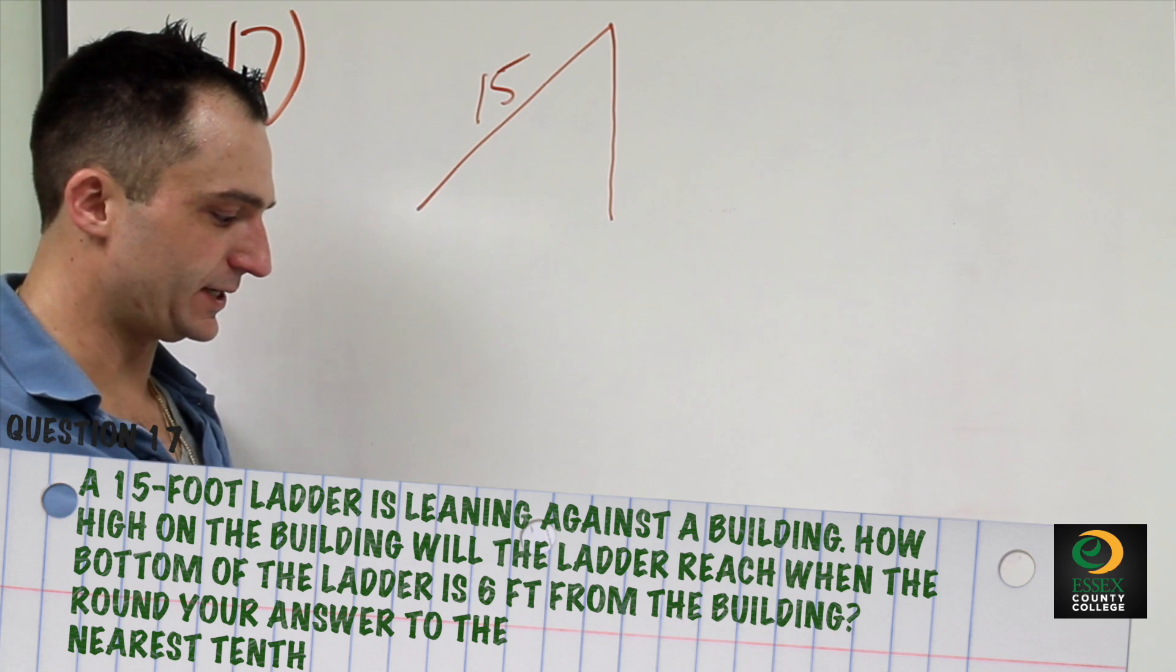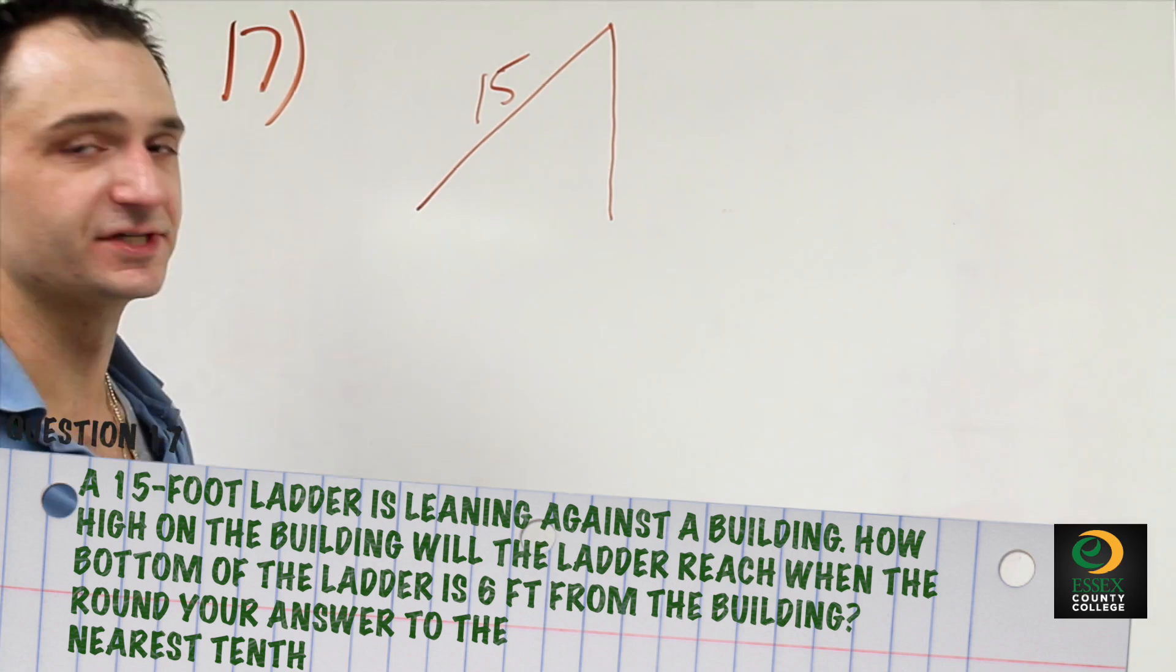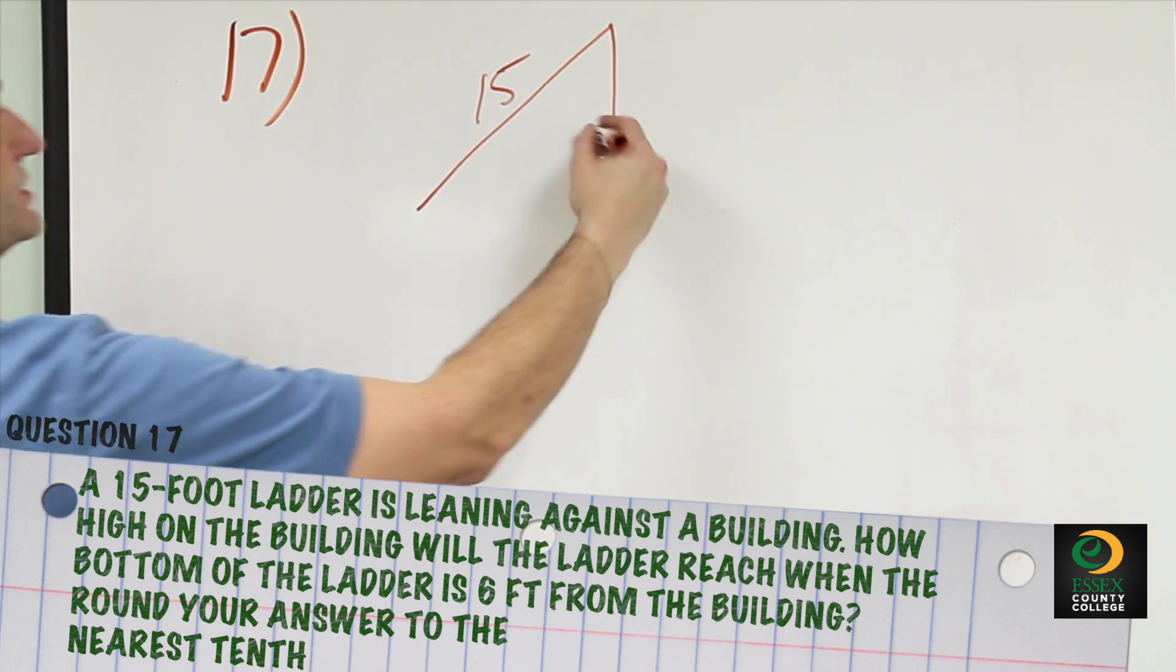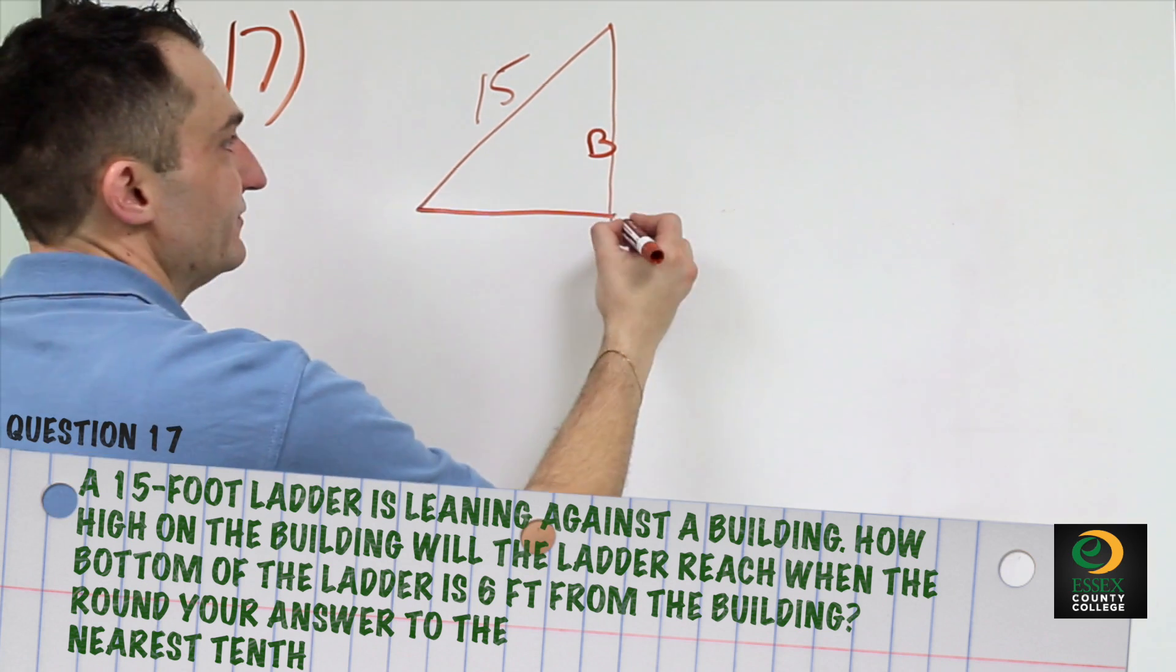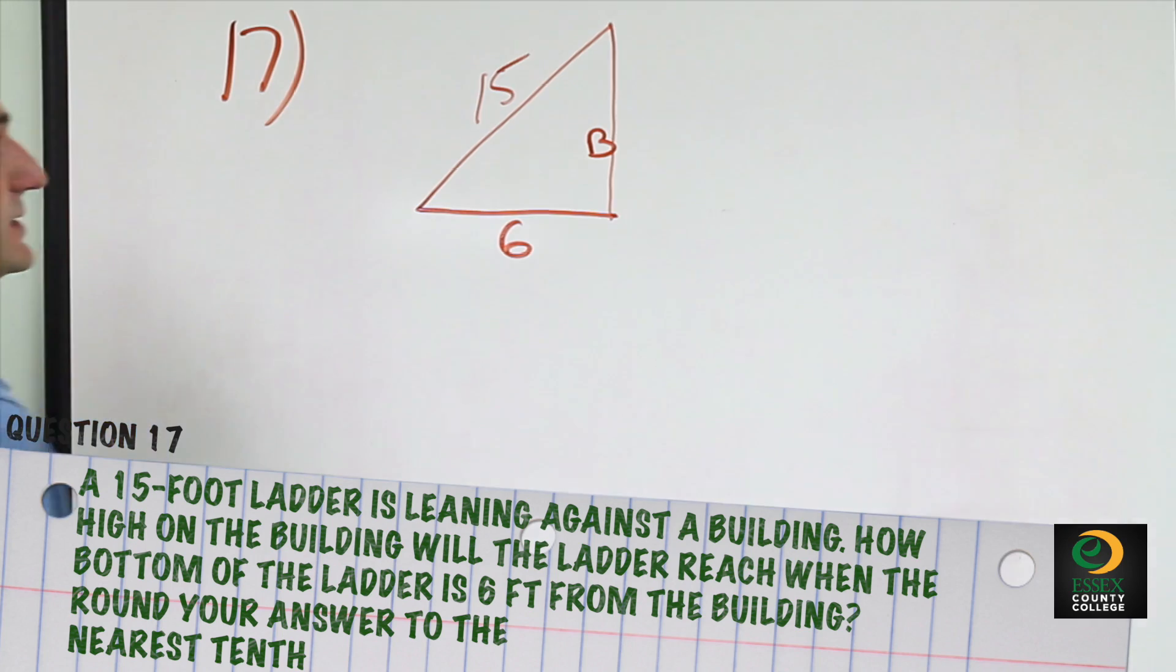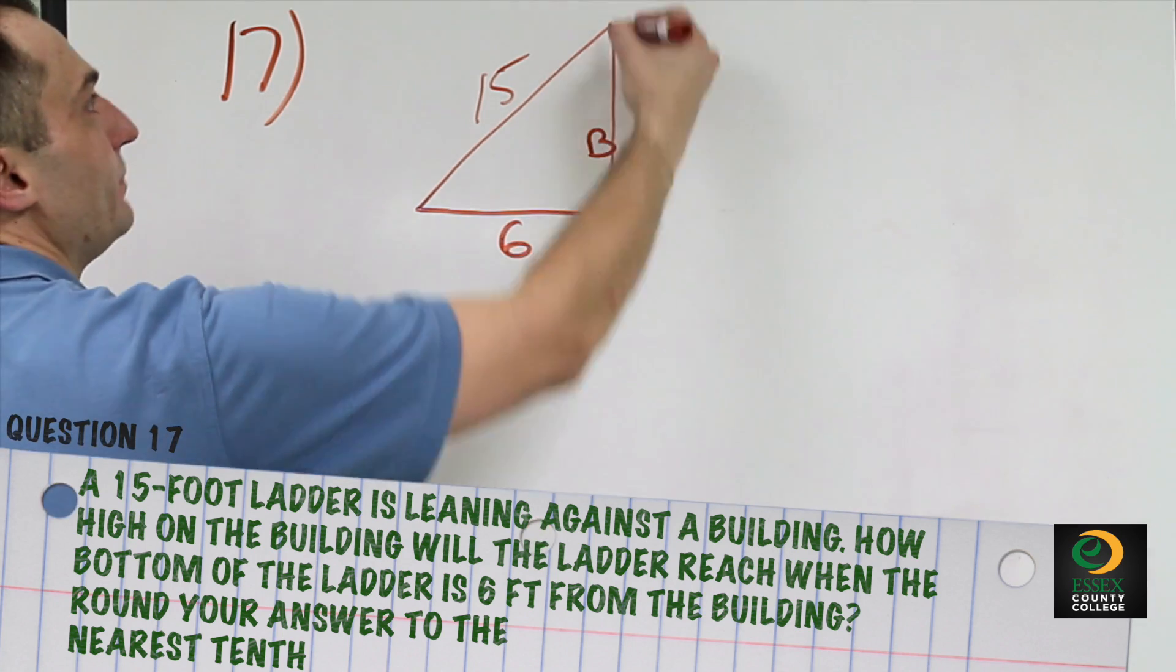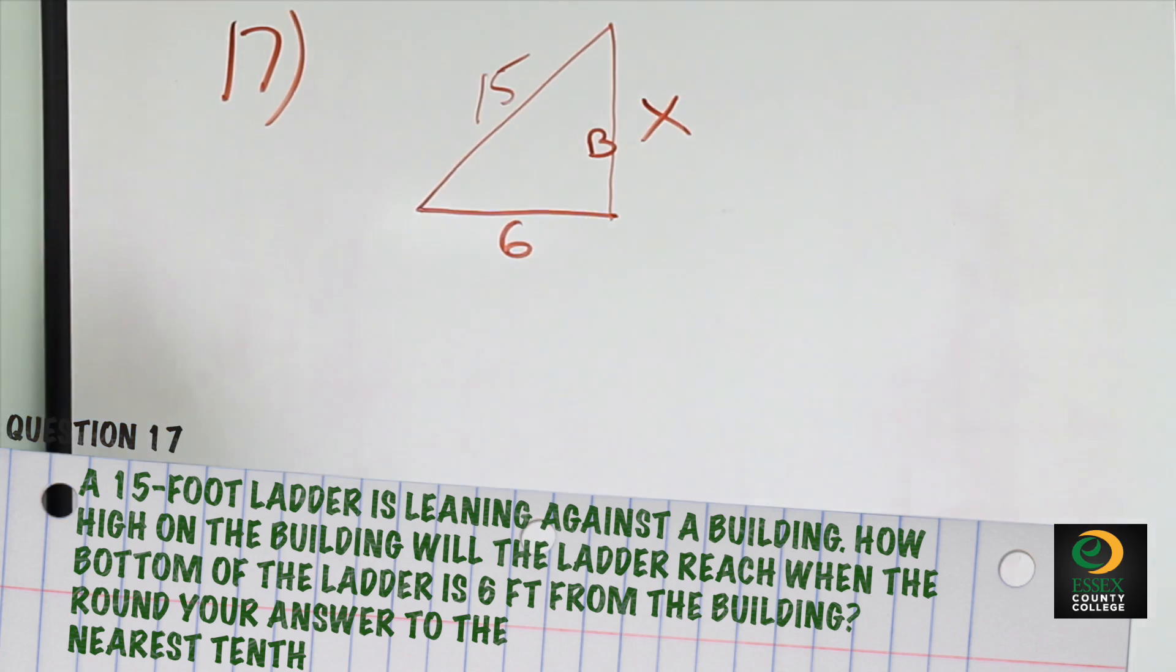How high on the building will the ladder reach when the bottom of the ladder is 6 feet from the building? So this is our building here and the ladder is 6 feet from the base of it. So this is 6 and it wants to know how high up on the building it will be. So that is our x.